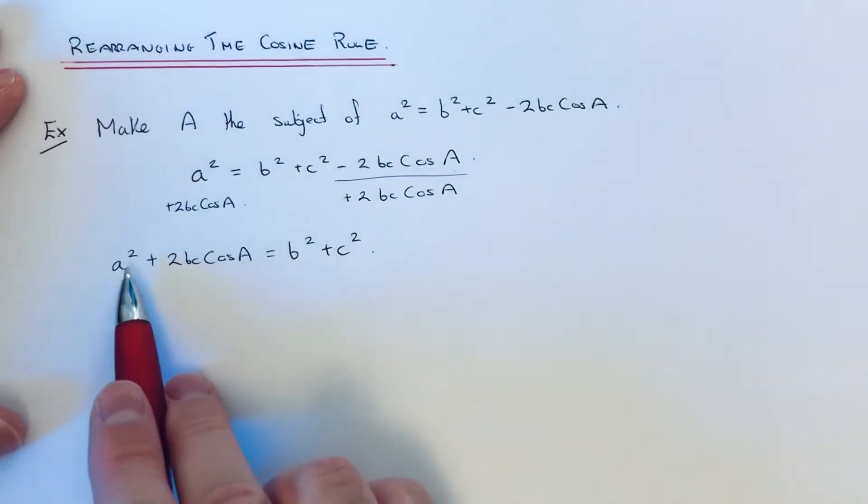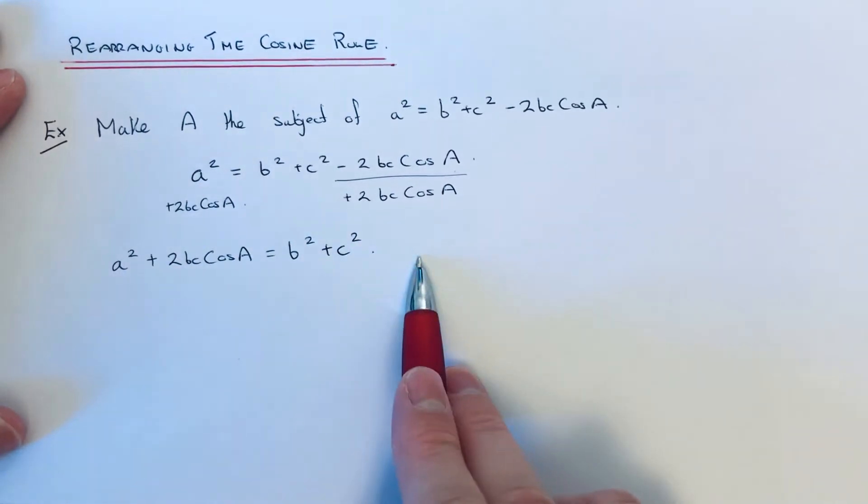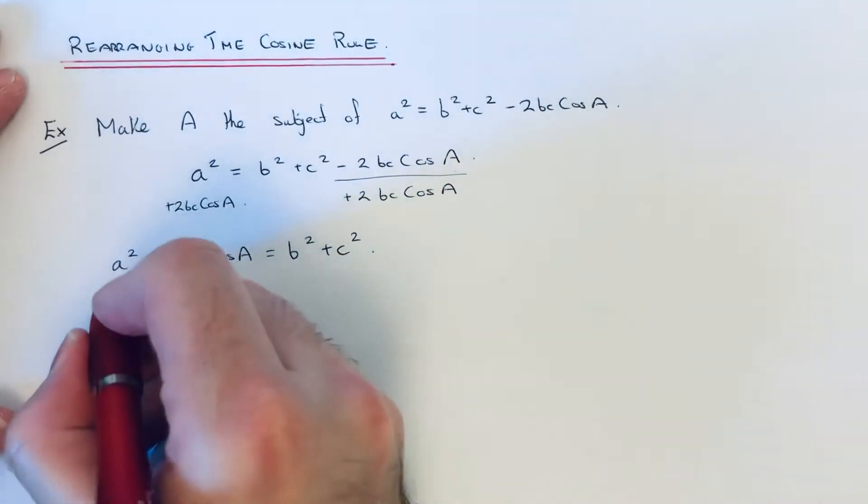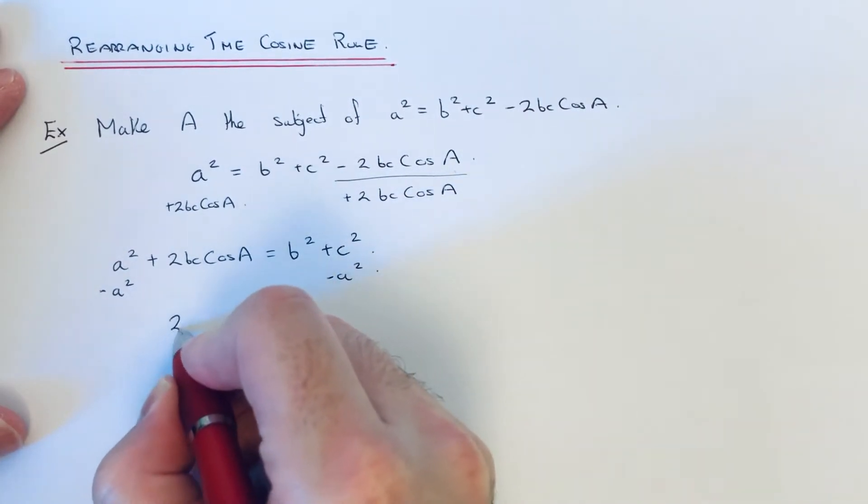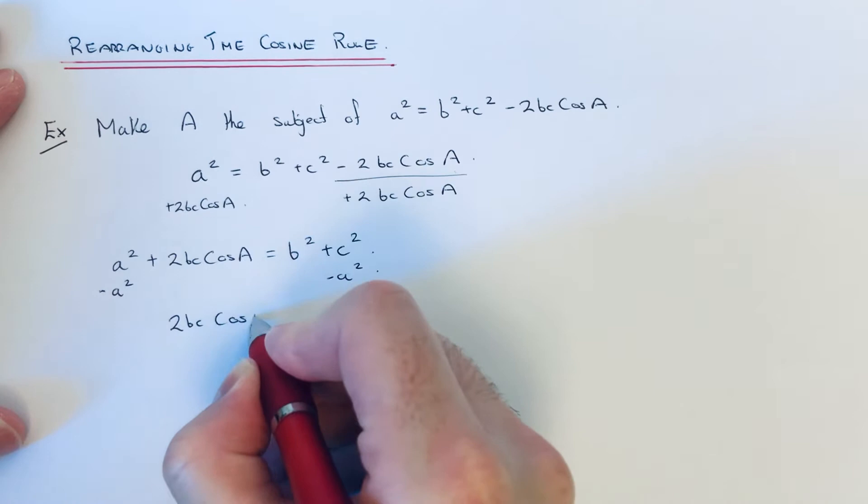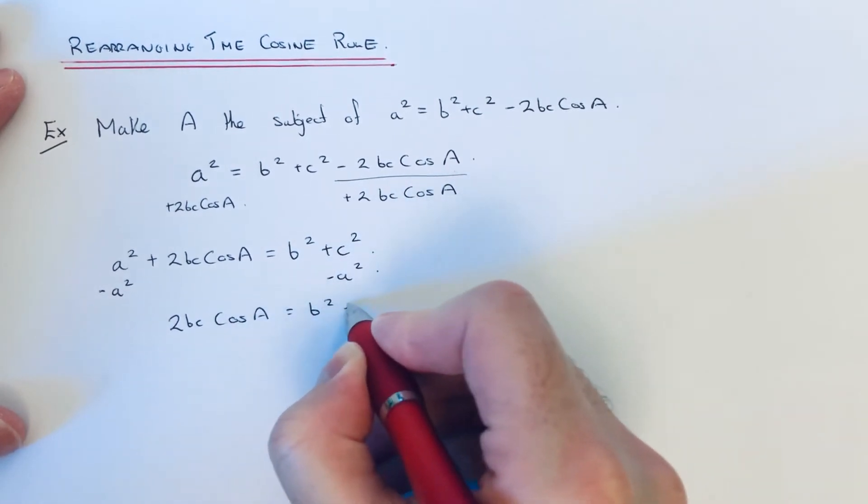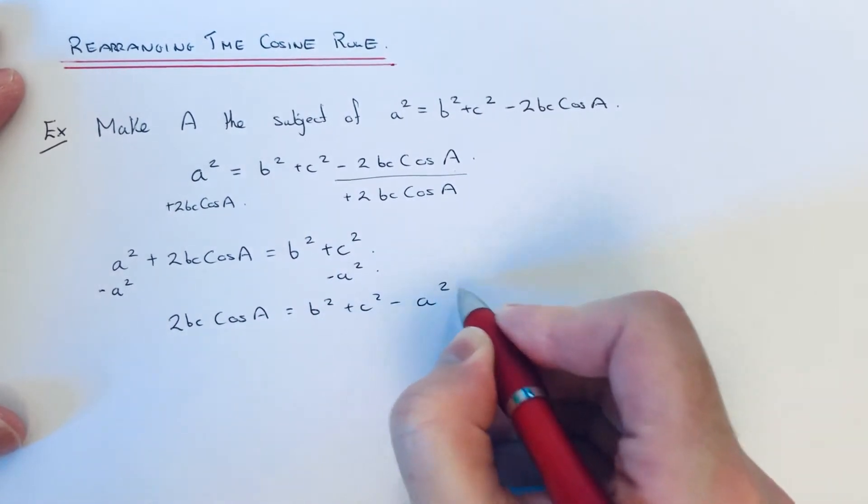Next I'm going to get rid of the a squared, get that on the right-hand side. I can do that by taking a squared from both sides. So that will give me 2bc cos A equals b squared plus c squared minus a squared.